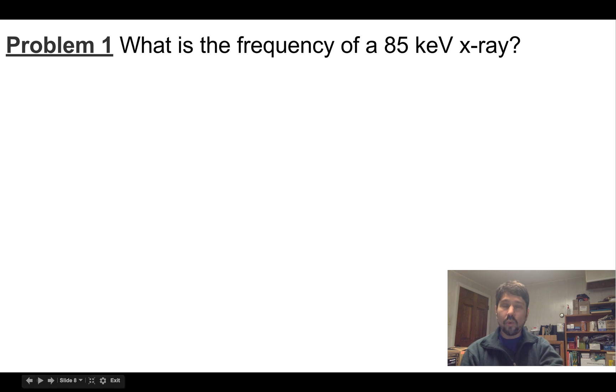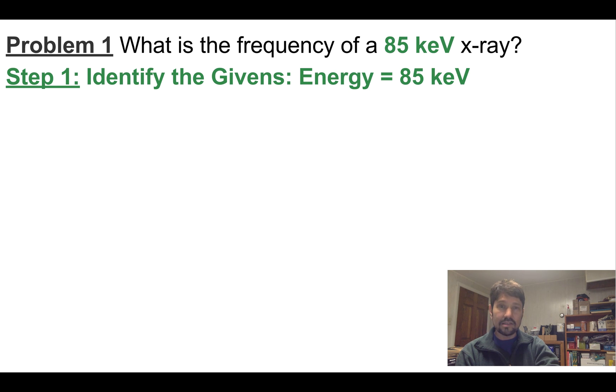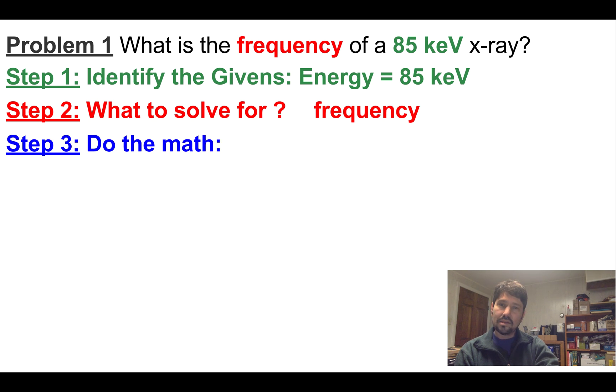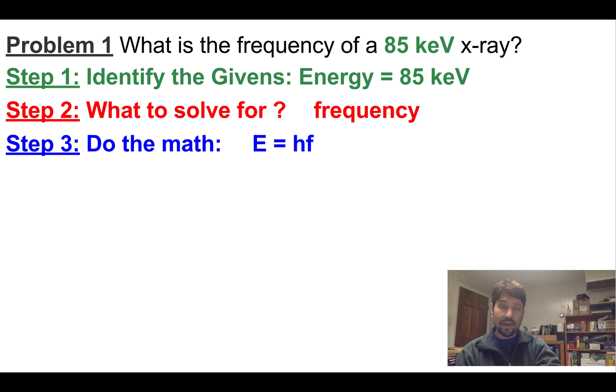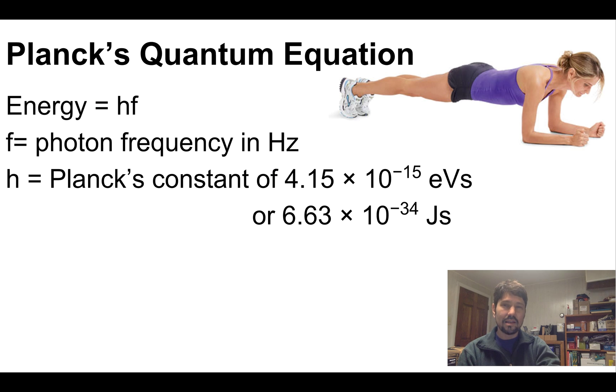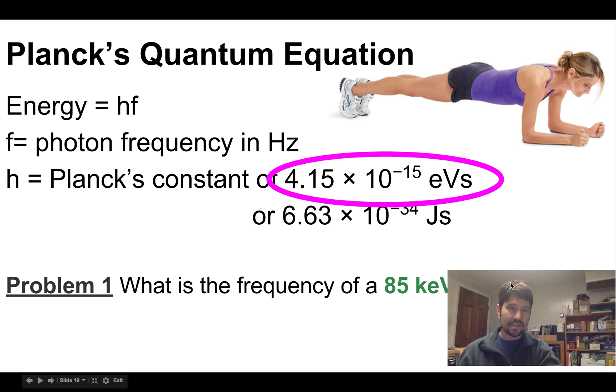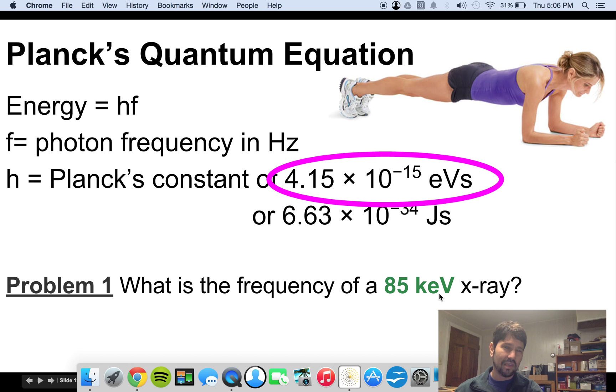So let's do a problem. What is the frequency of an 85 keV x-ray? Our given is the energy is 85 keV. What we're going to solve for is the frequency. So we're going to do the math. We'll need a formula. So I got frequency and I want energy, so I'll pick this formula: energy equals Planck's constant times frequency. And we're going to need to know Planck's constant. The problem is talking about keV, so we better pick Planck's constant with electron volts because units are so important.